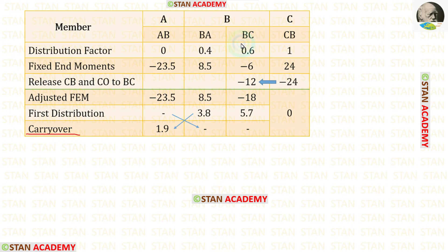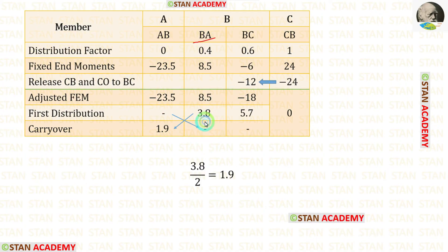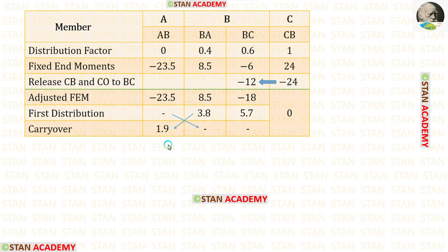Now let us make the carry-over. We cannot carry over between BC and CB because CB has already been released to 0. Carry-over is only made between AB and BA. Since AB has no distribution, there is no carry-over from AB to BA. For BA, the distribution is 3.8, and half of 3.8 is 1.9, which is carried over to AB. Now there are no values at joint B, so we cannot make a second distribution.